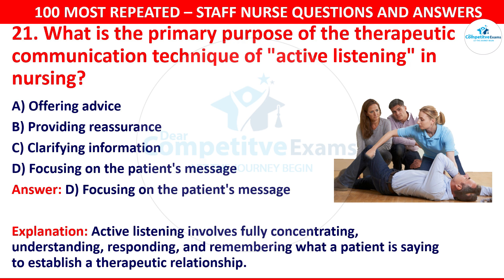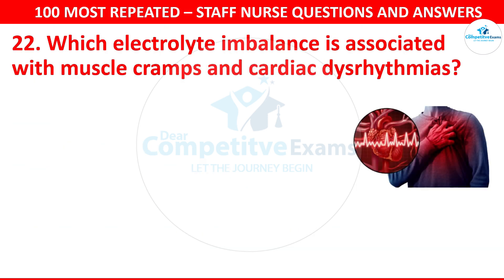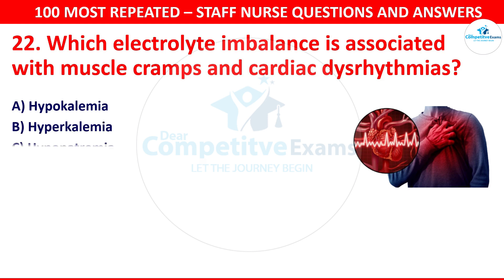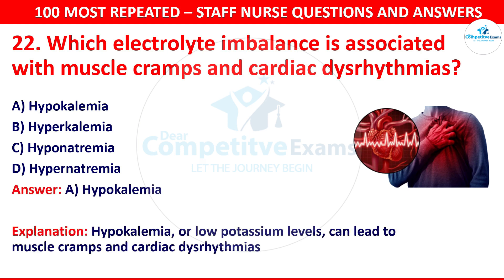Question 22. Which electrolyte imbalance is associated with muscle cramps and cardiac dysrhythmias? Your options are hypokalemia, hyperkalemia, or hyponatremia. The correct answer is hypokalemia. Hypokalemia, or low potassium levels, can lead to muscle cramps and cardiac dysrhythmias.